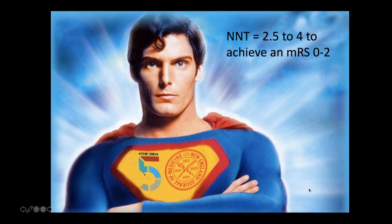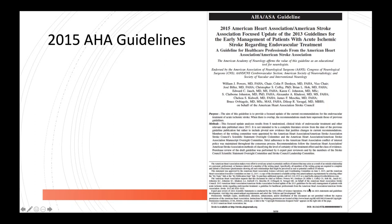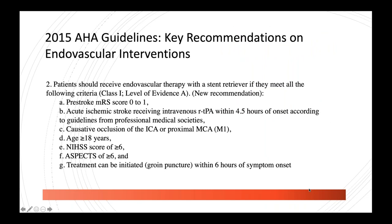By comparison, for STEMI the number needed to treat is in the 16 to 20 range — a much weaker treatment effect. This is what shifted things and made thrombectomy standard of care. When those five New England Journal trials were published, the AHA updated the stroke treatment guidelines, putting in a six-hour window from symptom onset for triaging and treating these patients.